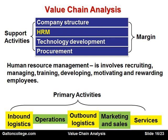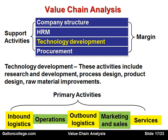Technology development includes research and development, process design, product design, and raw material improvements. This is the R&D end of the business — it keeps the business at the front, up to date, and competitive in the market by having an innovative product, an innovative design, and a dynamic image in the marketplace. It's a support activity, but very important in the delivery of an effective product.